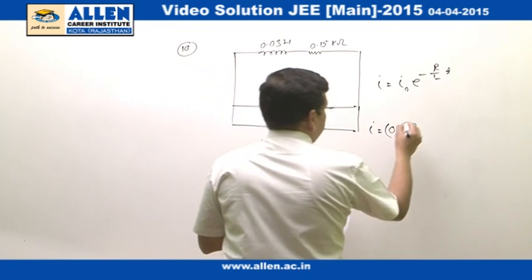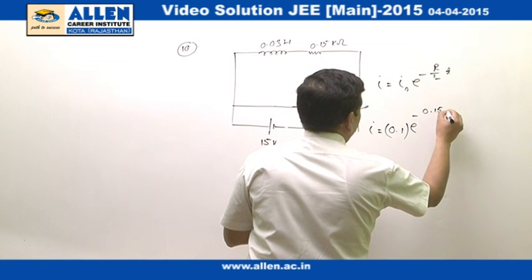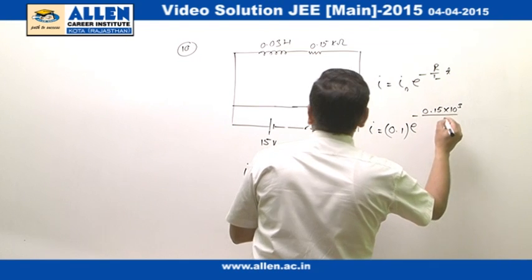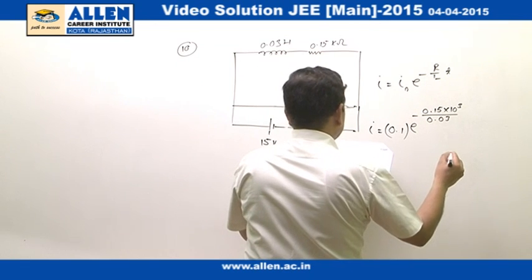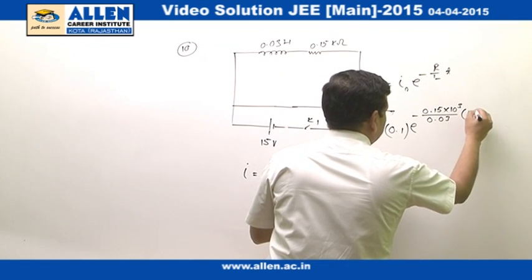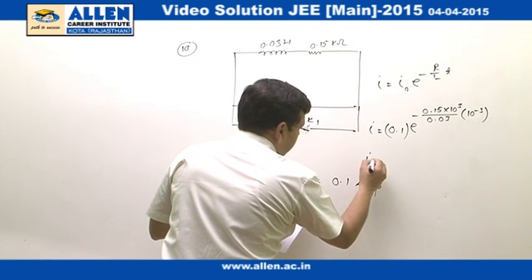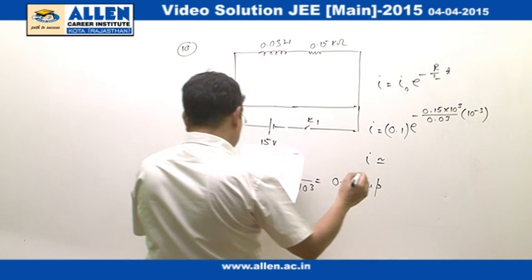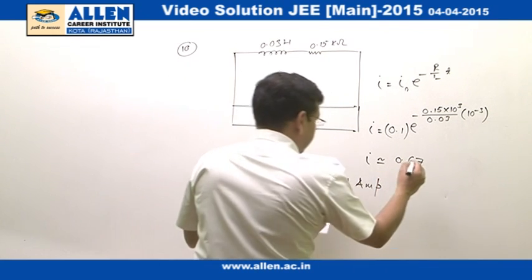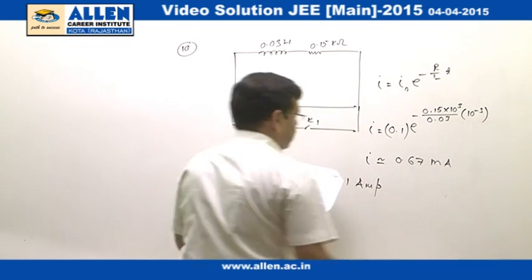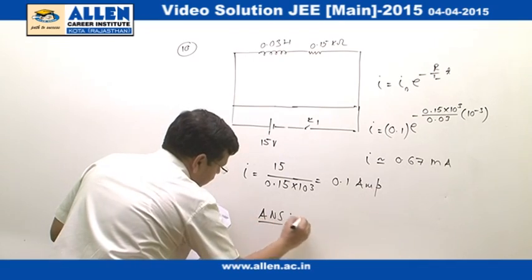So, we will get E raise to power minus R, R is 0.15 into 10 raise to power 3 divided by L which is 0.03 into T which is 1 millisecond. If we solve this, I turns out to be close to this value, that is 0.67 milli ampere. So, the correct option would be answer number 2.